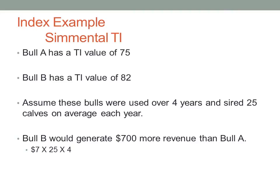Here's an example using Simmental's Terminal Index. Assume we're comparing two bulls: Bull A has a TI value of 75 and Bull B has a TI value of 82. Further assume these bulls were used over four years, siring on average 25 calves each year. From that, Bull B would generate on average $700 more revenue than Bull A — derived from the difference of seven between their TI values, times 25 calves per year over four years. These index values, when used appropriately, can determine the added value of one sire over another — or how much more one sire is worth to you compared to another.